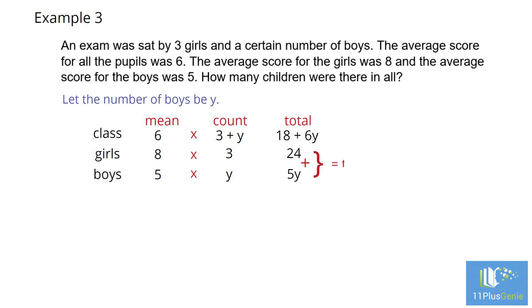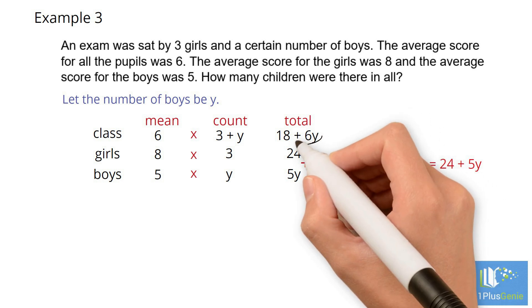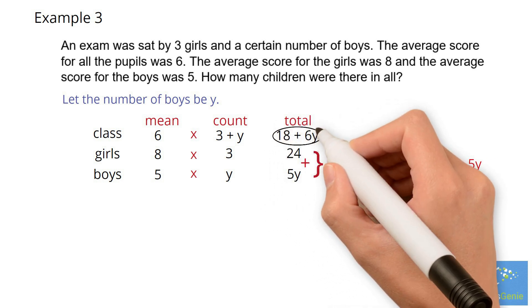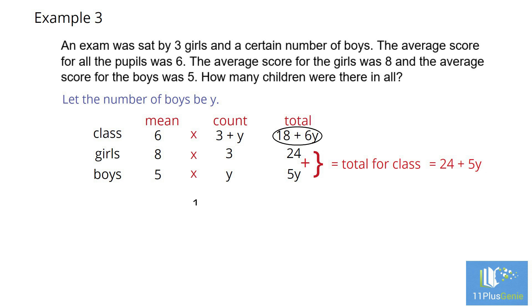All pupils, girls added to the boys equals 24 plus 5Y. But all the pupils in the class equals 18 plus 6Y. Therefore, 18 plus 6Y equals 24 plus 5Y.